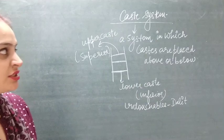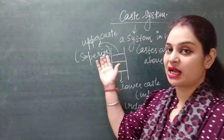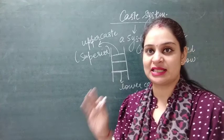Some castes are placed very low, which are called lower caste, also known as 'dalit' or 'dabbik'. Some castes are placed above, known as upper caste. People who belong to upper caste think they are superior, and their mindset toward lower caste people is that they are inferior.